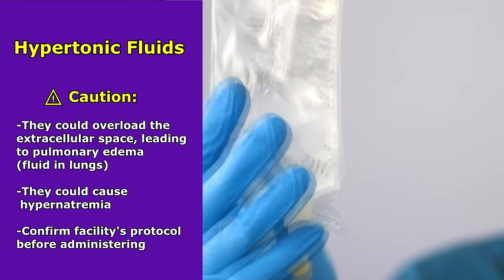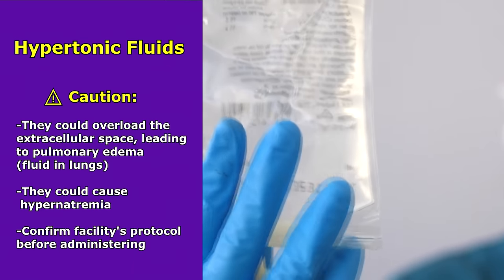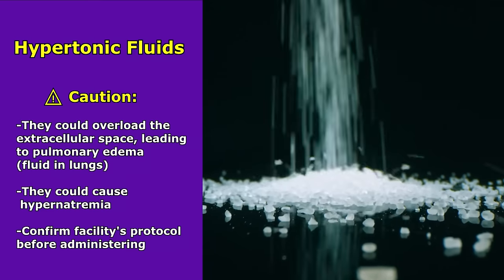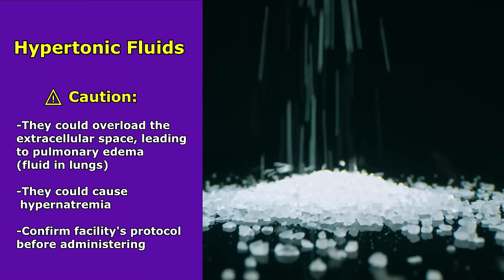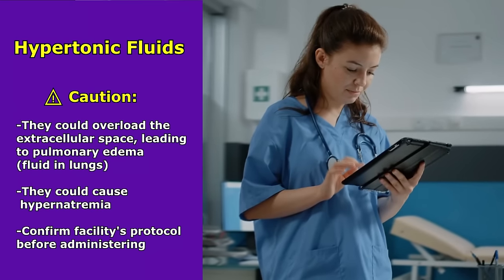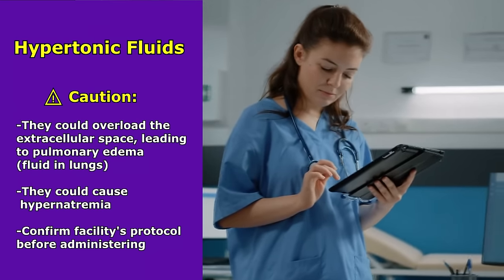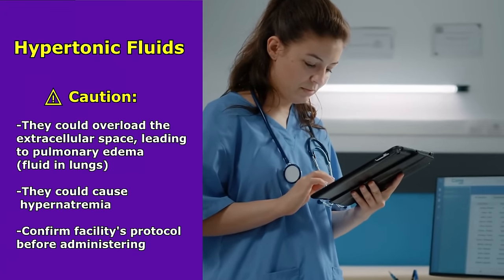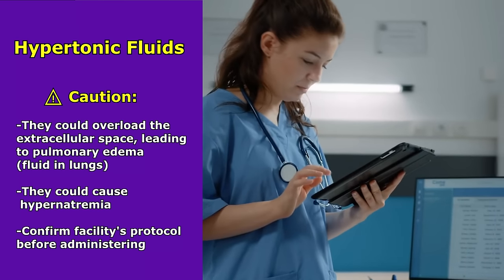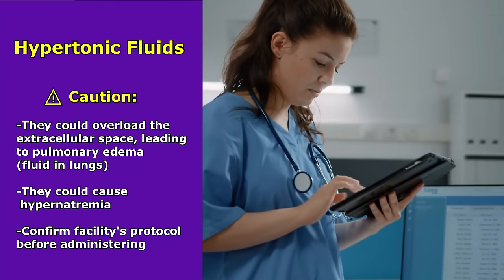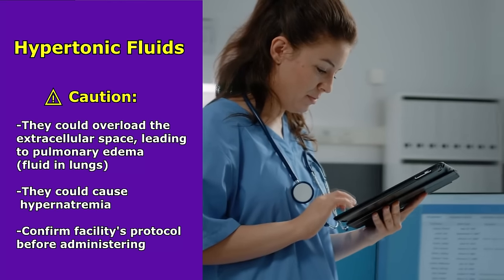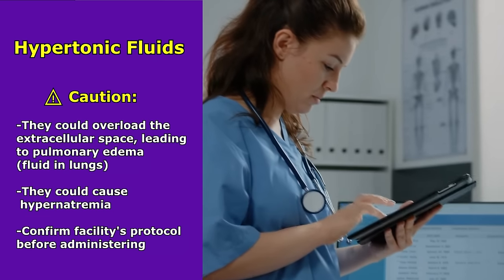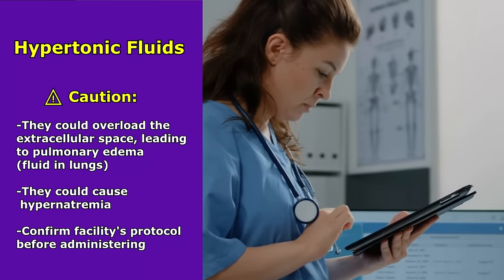You want to use hypertonic solutions very cautiously, because they carry the risk of overloading the extracellular space. Since we're pulling fluid from inside the cell to the extracellular space, this could overload the system and lead to pulmonary edema. Because these solutions are highly concentrated — for example, with saline — they could cause hypernatremia, so monitor sodium levels. Always check your facility's protocol on how to administer hypertonic solutions, as some may require administration through a central line rather than a peripheral IV, and be vigilant for extravasation, which can be very damaging to surrounding cells and tissue.